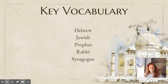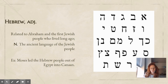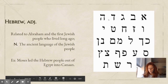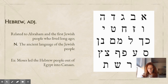Our key vocabulary for today are Hebrew, Jewish, Prophet, Rabbi, and Synagogue. Hebrew as an adjective means related to Abraham and the first Jewish people who lived long ago. Hebrew as a noun means the ancient language of the Jewish people. That is Hebrew, the written language of the Jewish people. Moses led the Hebrew people out of Egypt into Canaan.